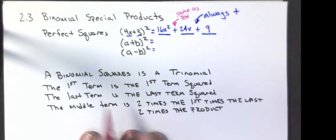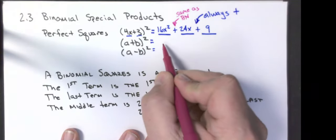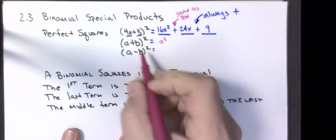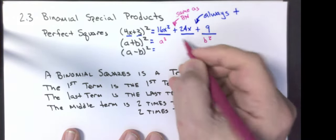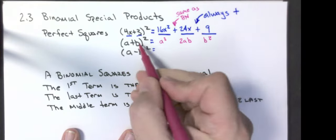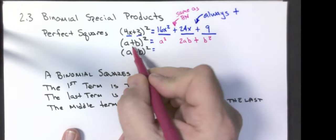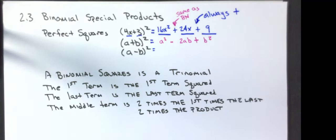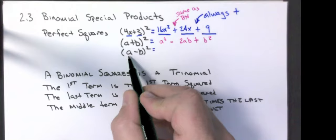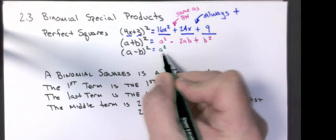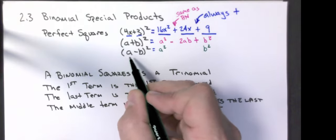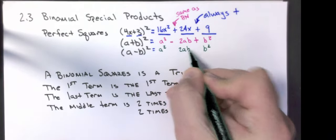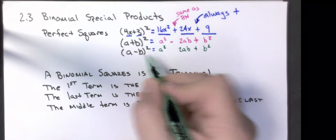Let's do the second one. Binomial squared is a trinomial. First term is the first term squared. The last term is the last term squared. The middle term is 2 times the first times the last. The last sign is always positive; the middle sign, I copy. And the last quick example: first term squared — a squared; last term squared — b squared; middle term, 2 times the first times the last — 2ab. The last sign is always positive; the middle sign, I copy.